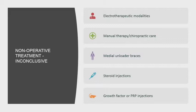Medial unloader braces have no good data to show they work, and should really be avoided in anybody who doesn't have a flexible deformity. A flexible deformity means that if you flex the knee down to about 15 to 30 degrees, you should be able to open up the medial joint line. If you can't on physical exam, a medial unloader brace will only cause pain by pushing against the fixed deformity.